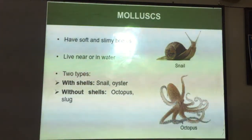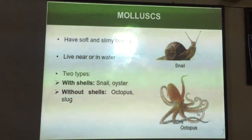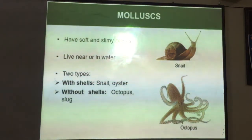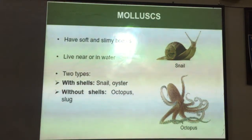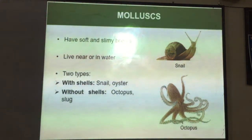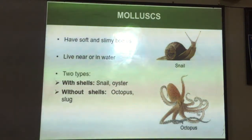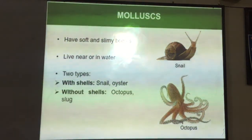Then we have mollusks. They have soft and slimy bodies and usually live near water. They can be of two types: with shells — examples are snail and oyster — and without shells — examples are octopus and slug.